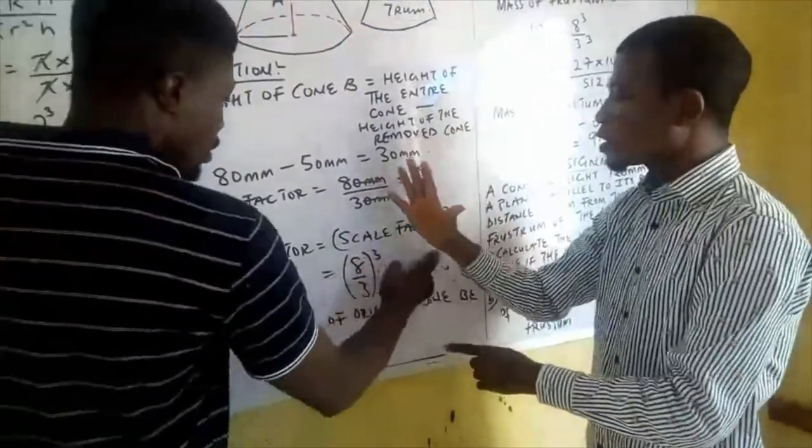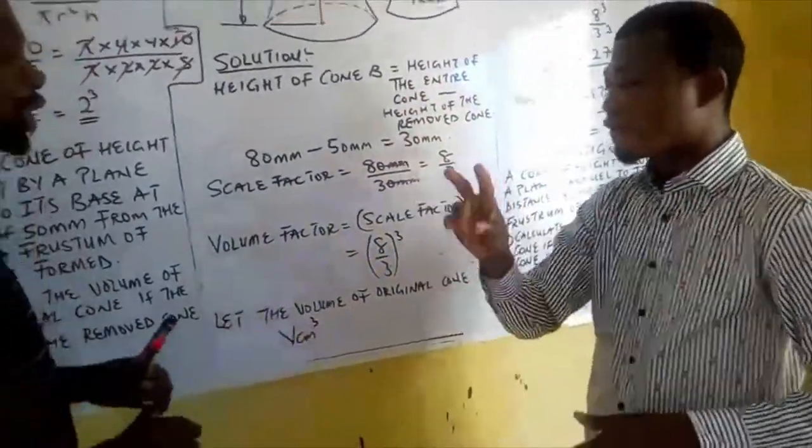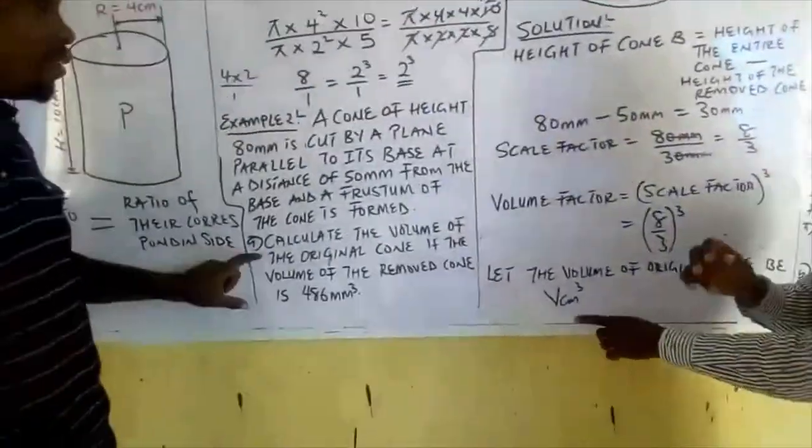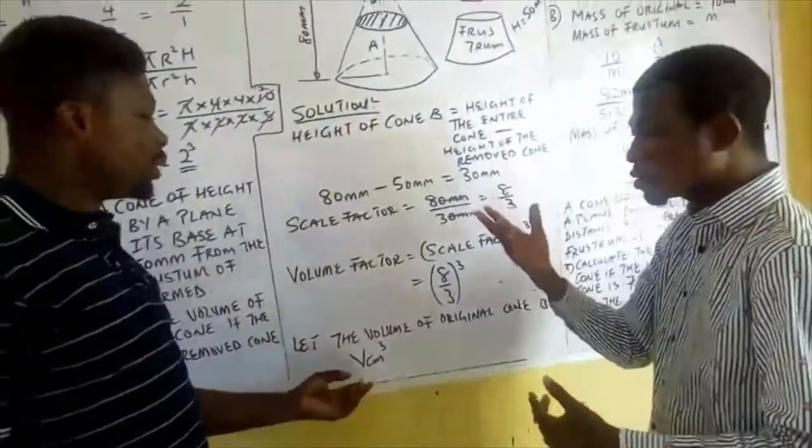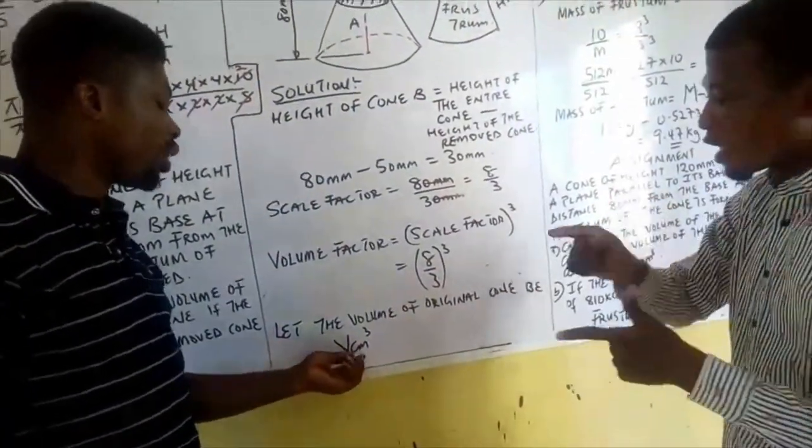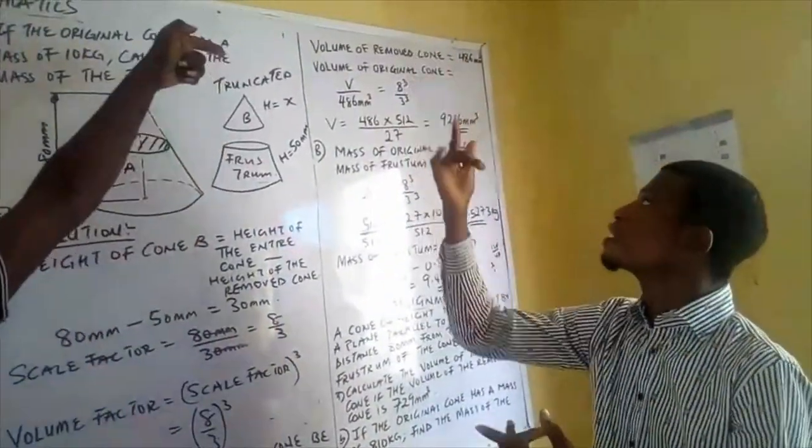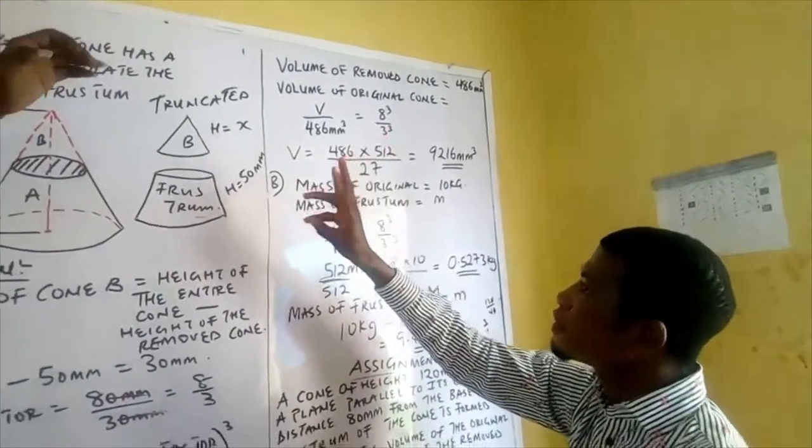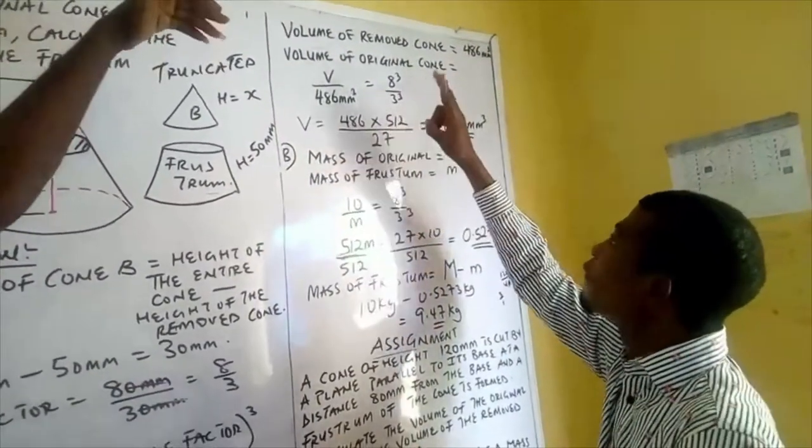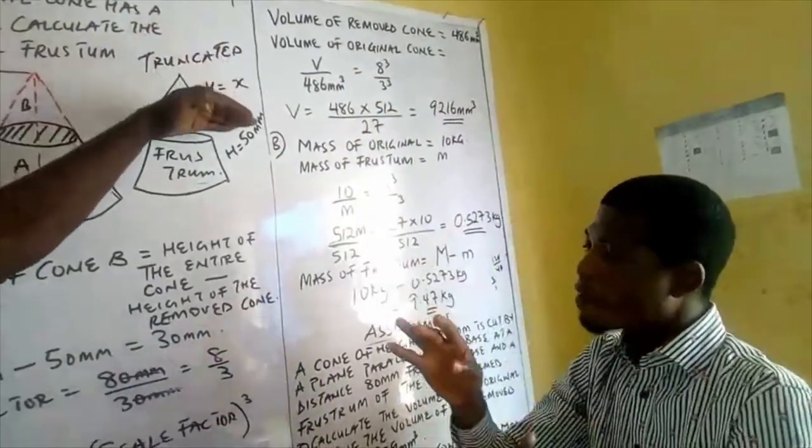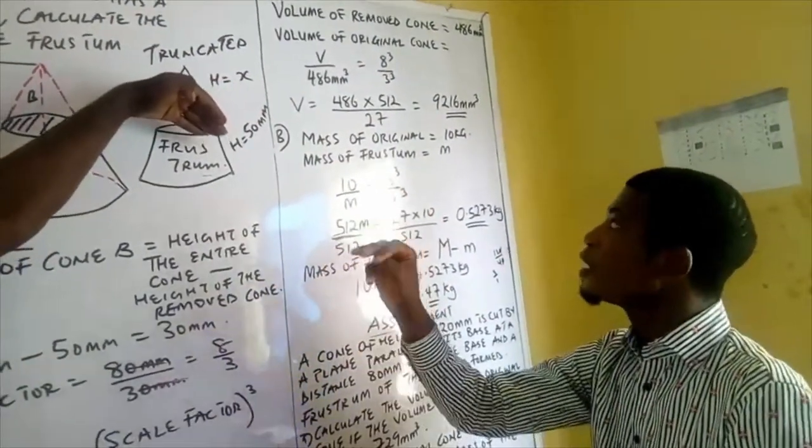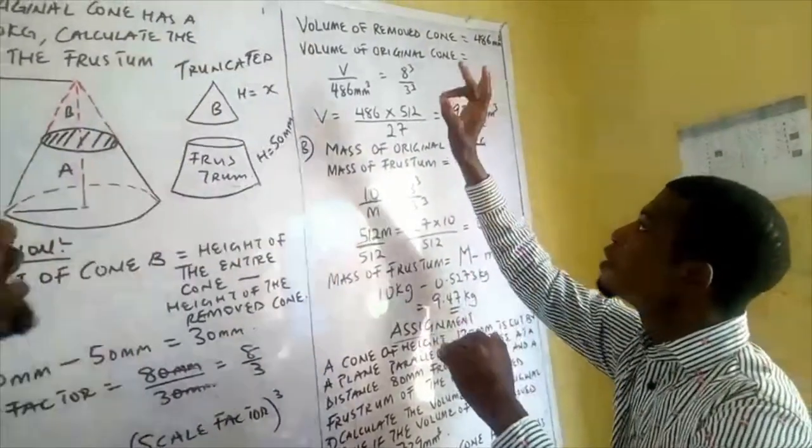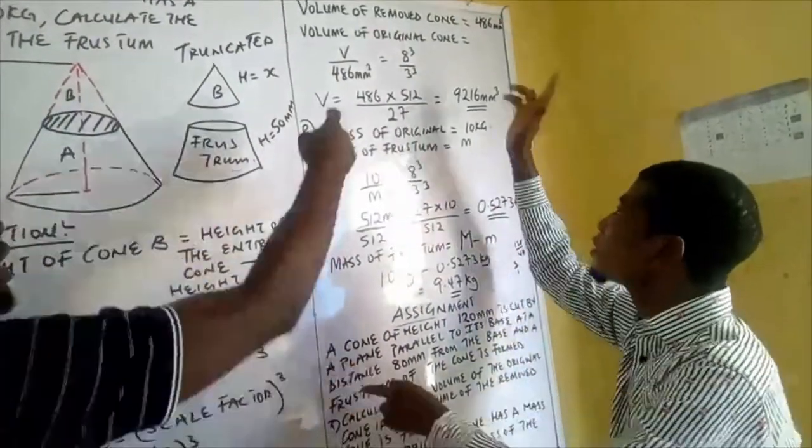Let the volume of the original cone be V. We are looking for question A, which talks about finding the volume of the original cone. Let the volume of the original cone be V, while the volume of the removed cone is 486 millimeters cubed. We have the volume of the original cone V over volume of the removed cone, which is the truncated part cone: V/486 = 8³/3³.